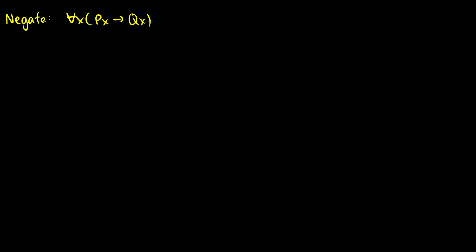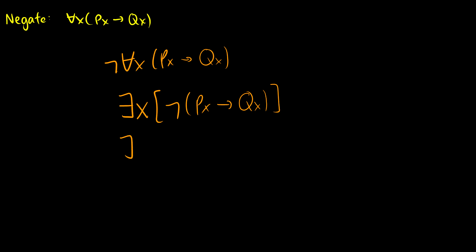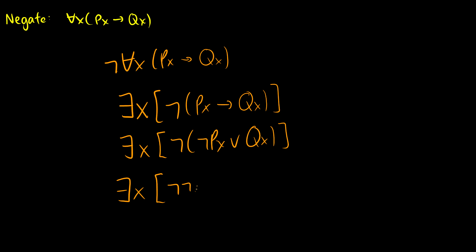Here's another one: negate ∀x P(x) → Q(x). We have not-∀x P(x) → Q(x). The negation flips the universal to an existential and negates the rest, giving ∃x ¬(P(x) → Q(x)). Using the definition of the conditional, that becomes ∃x ¬(¬P(x) ∨ Q(x)), and then applying De Morgan's law we get ∃x (¬¬P(x) ∧ ¬Q(x)). The double negation cancels, leaving ∃x P(x) ∧ ¬Q(x).